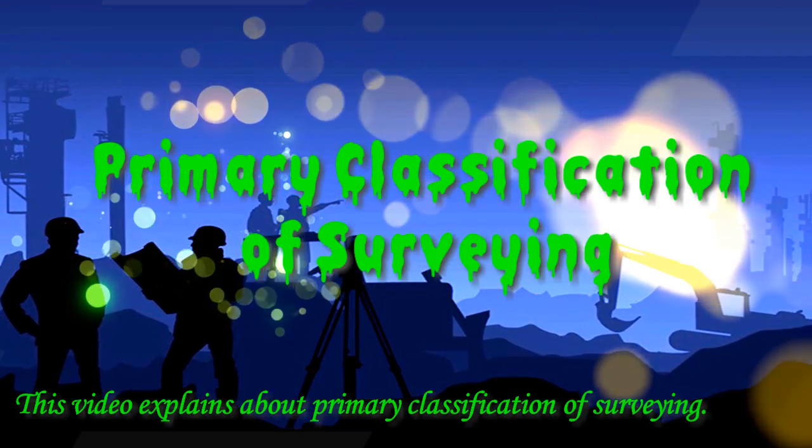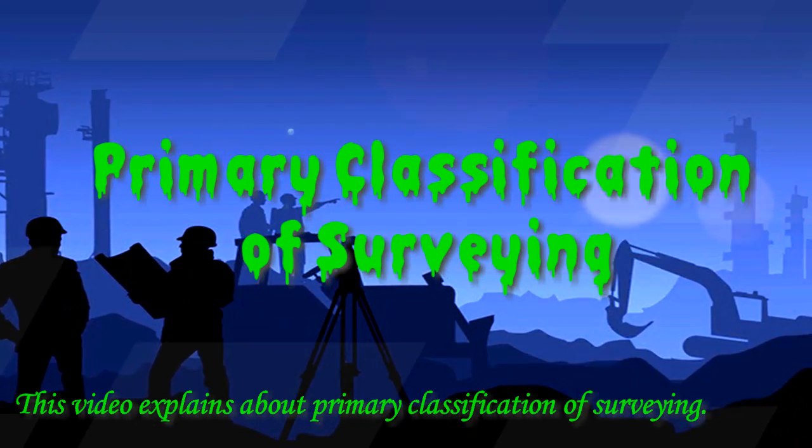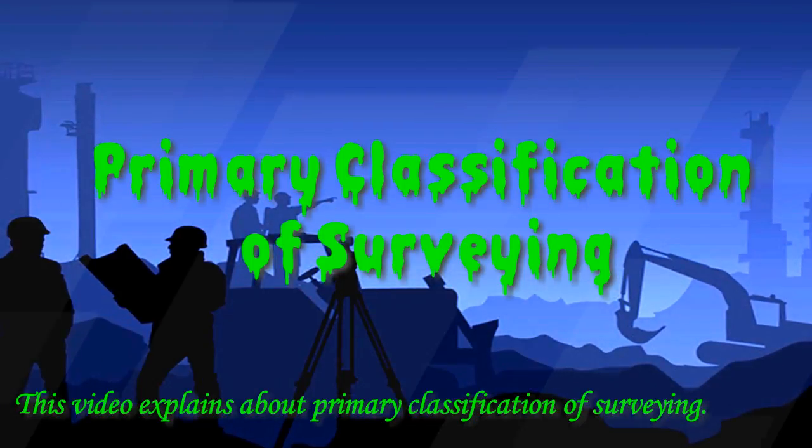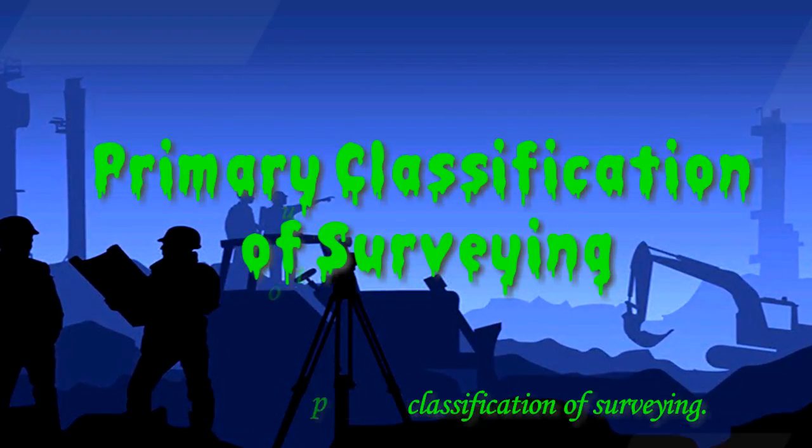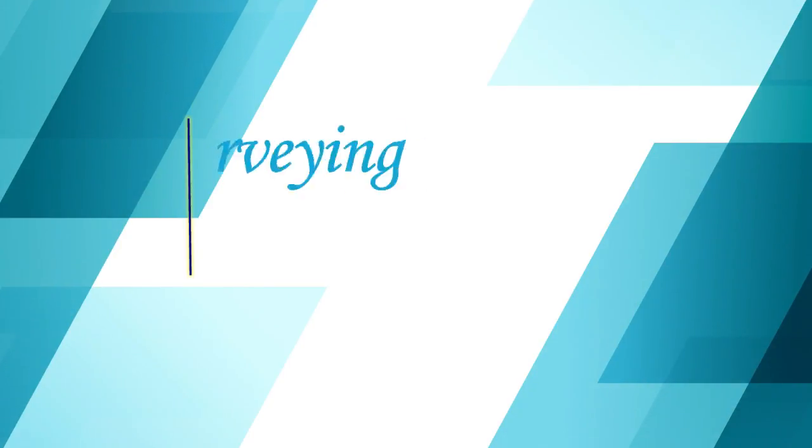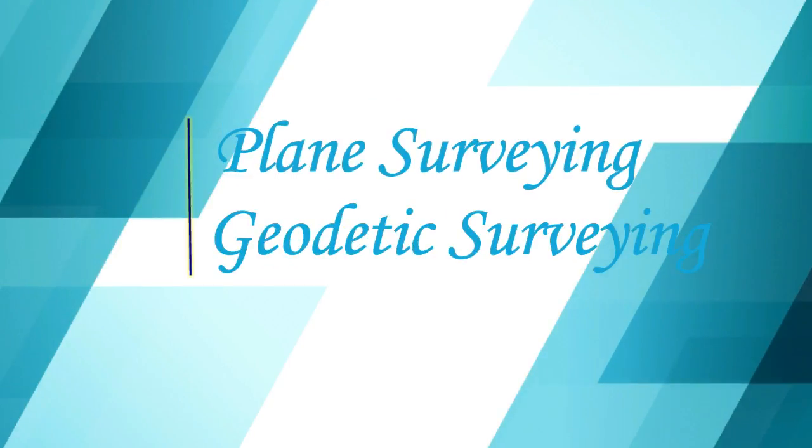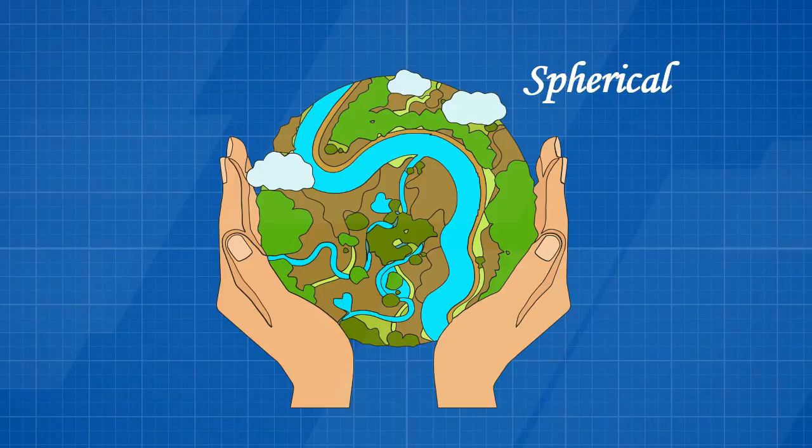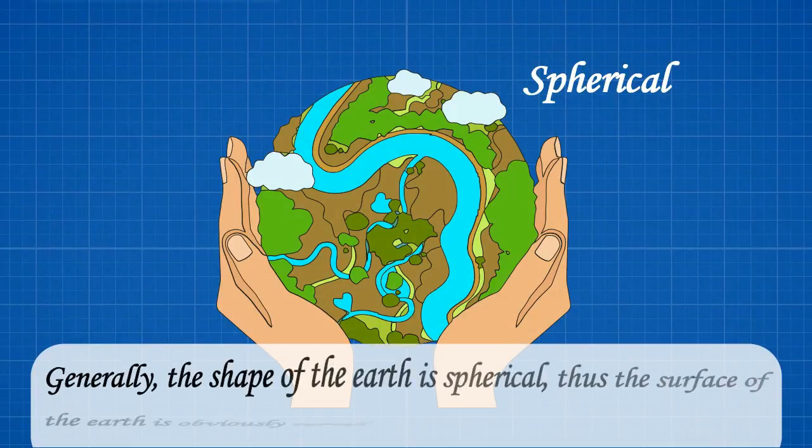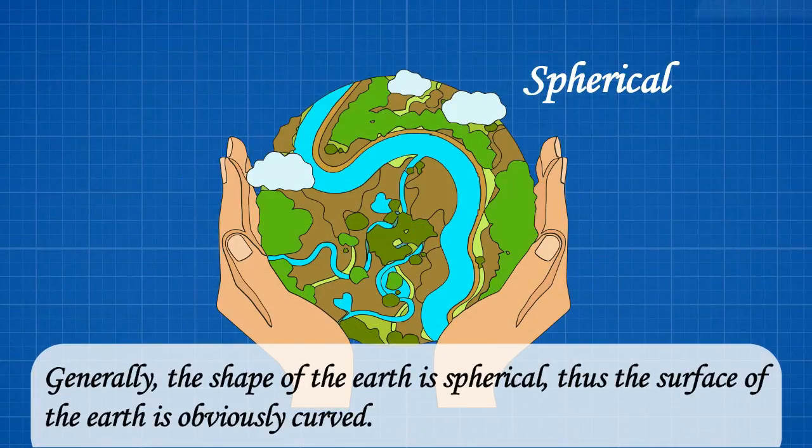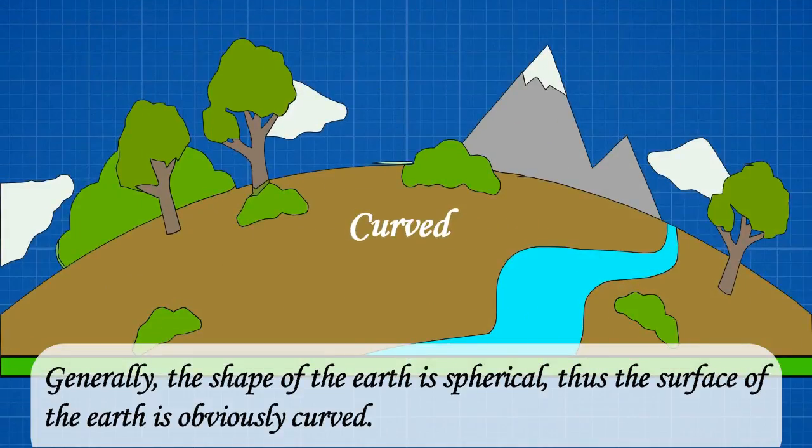This video explains the primary classification of surveying. Surveying is primarily classified as plane surveying and geodetic surveying. Generally, the shape of the earth is spherical, thus the surface of the earth is curved.